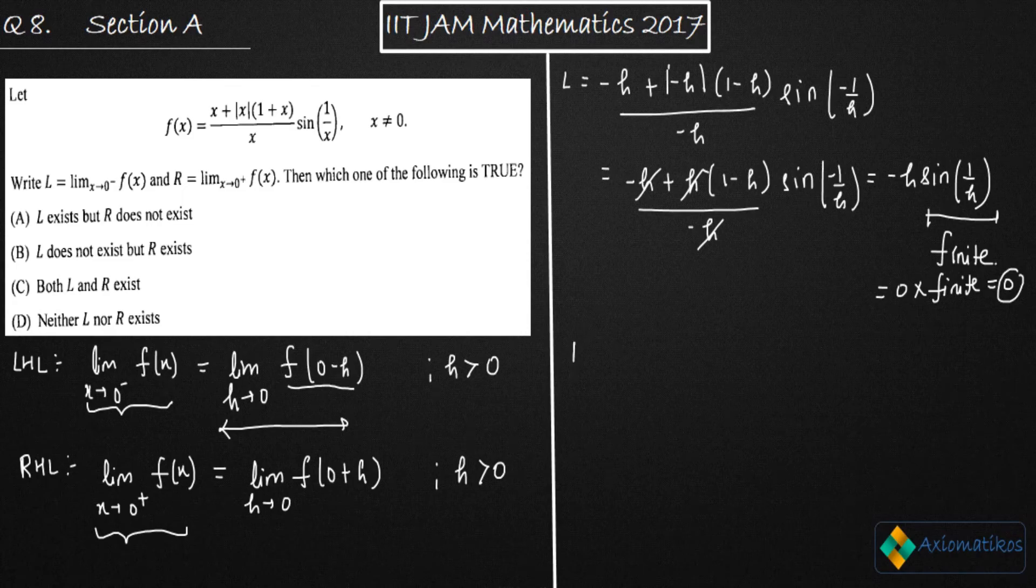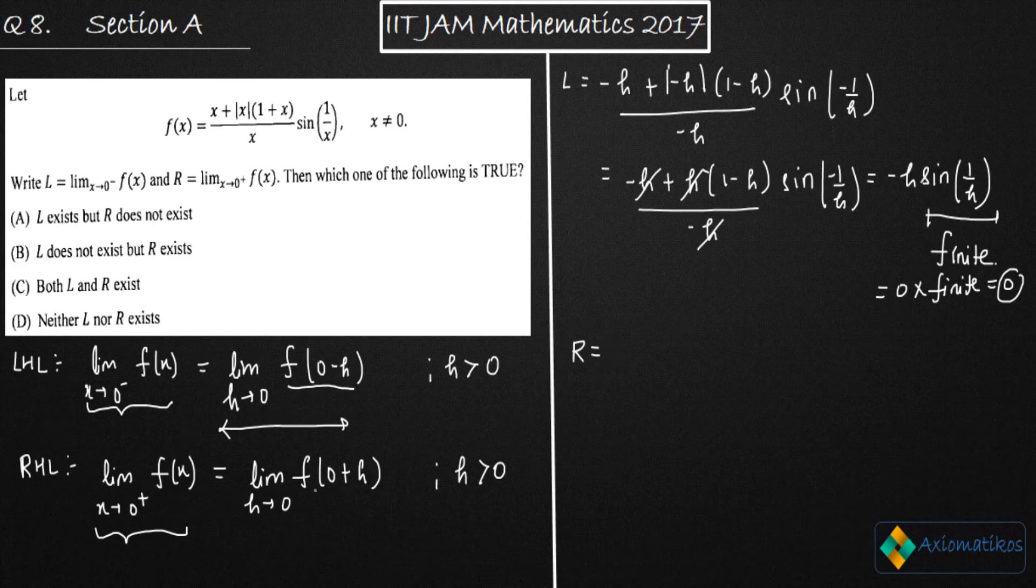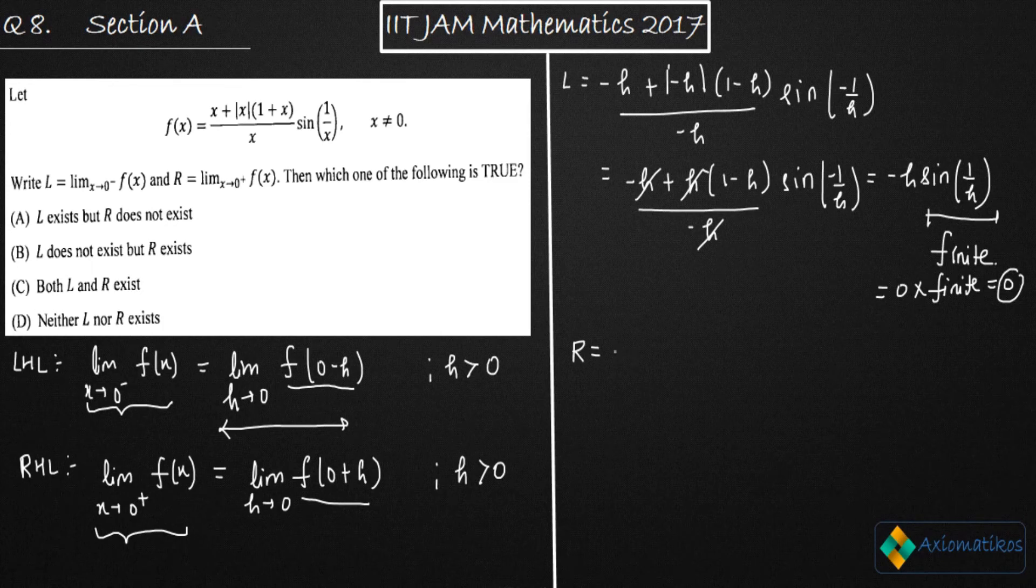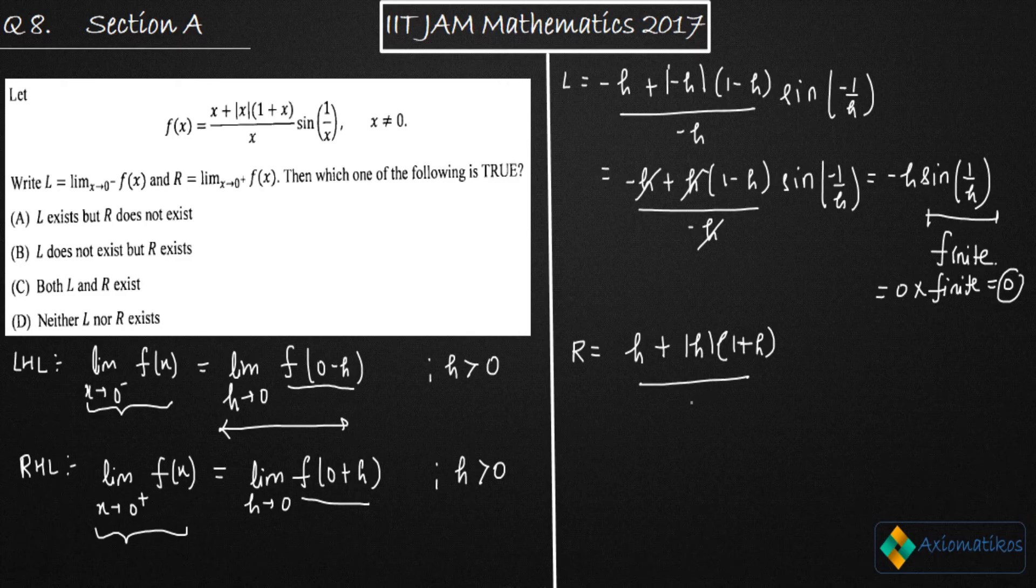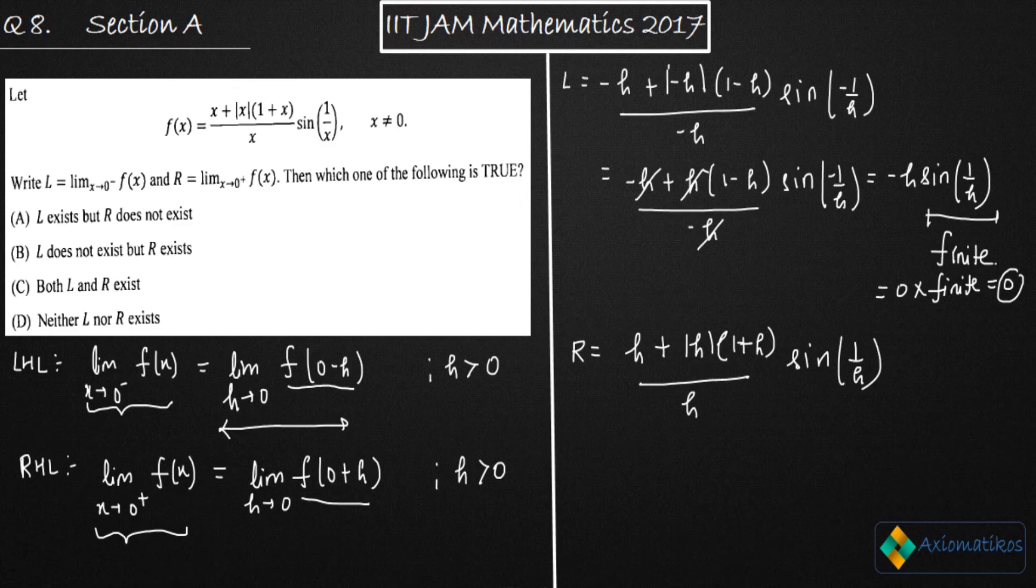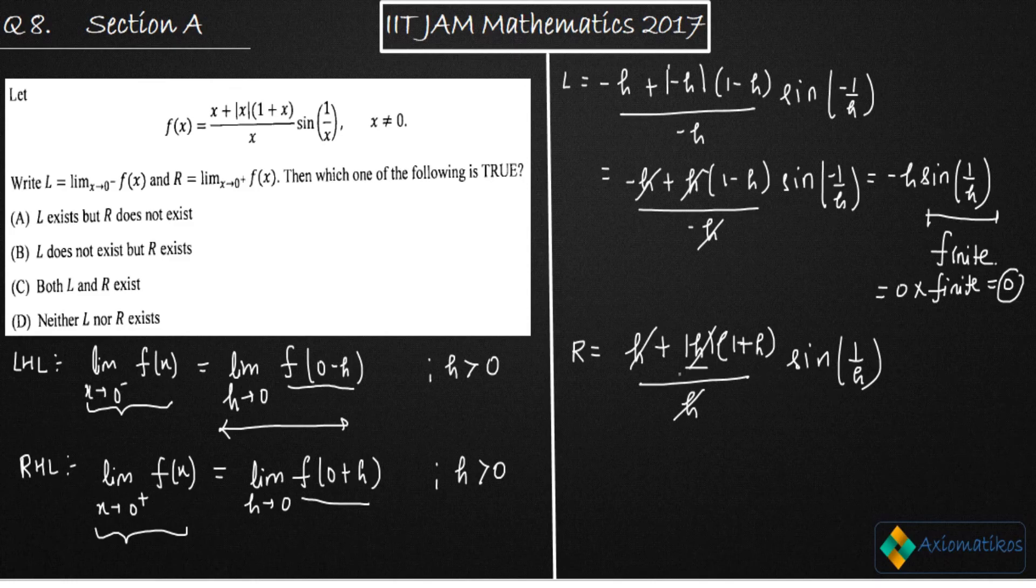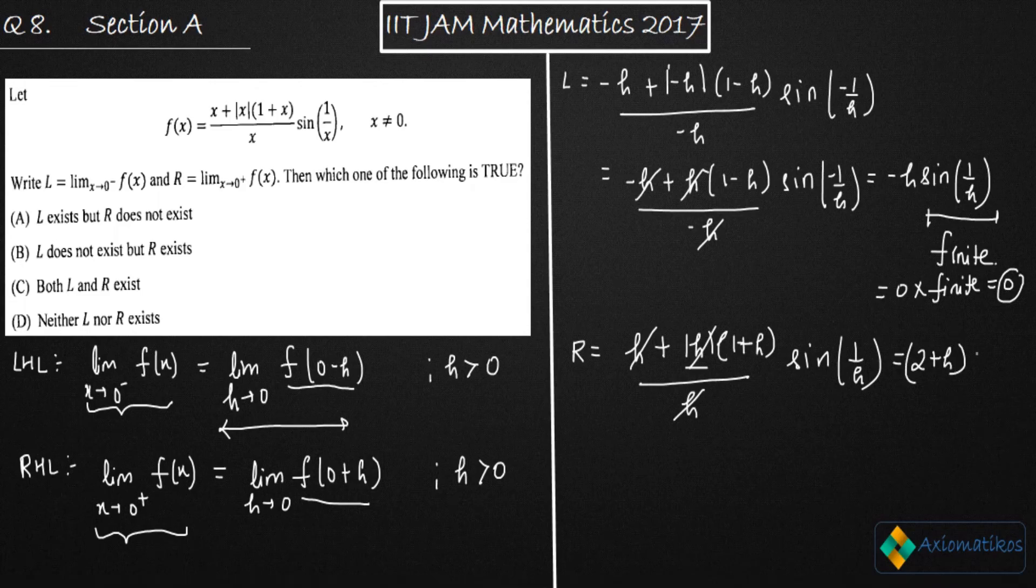Similarly, we can do it for R. Let us try to figure out what your R is. This is f of h you have to place. So you will get h plus mod h, one plus mod h over this h, and here you are getting sine one. Now this mod h will be h, so we can cancel these things. What you will get finally is two plus h times of sine of one by h.